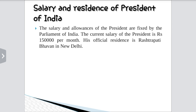Salary and residence of the President of India: The salary and allowances of the President are fixed by the Parliament of India. The current salary of the President is 1,50,000 per month. His official residence is at Rashtrapati Bhavan in New Delhi.